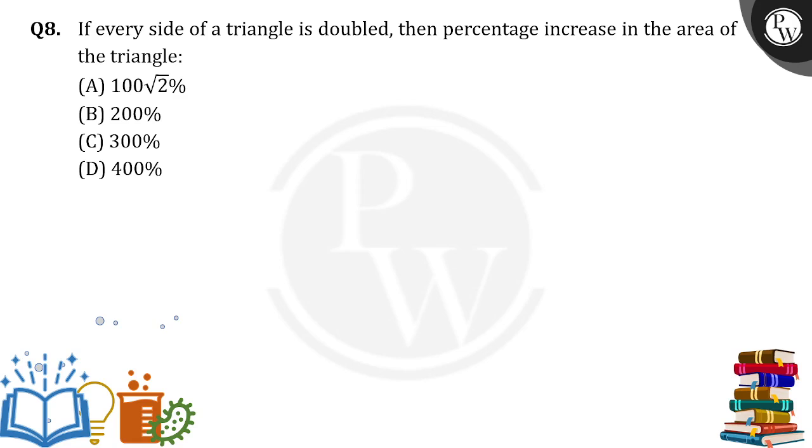So let's suppose there is a triangle whose sides are A, B, and C. What is S value? S is equal to A plus B plus C by 2.